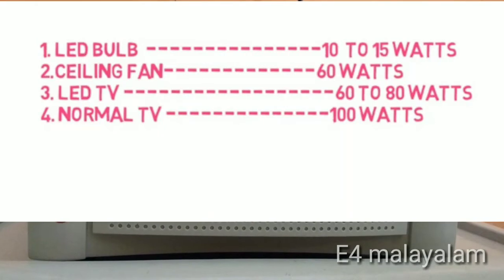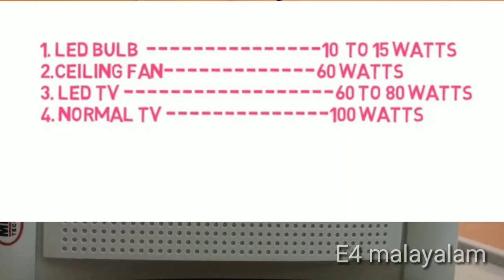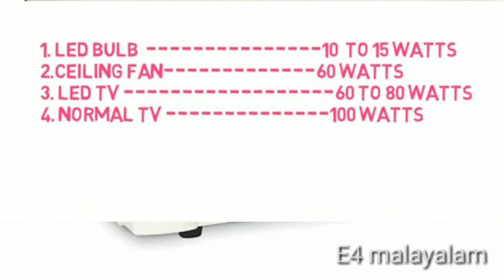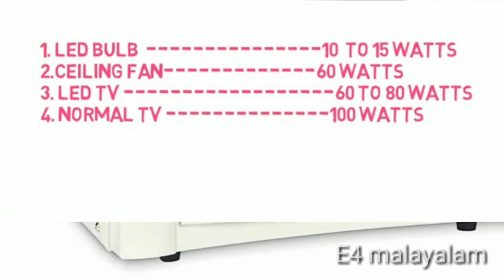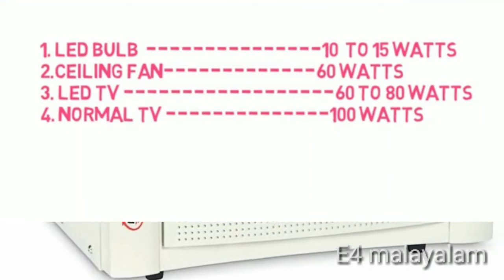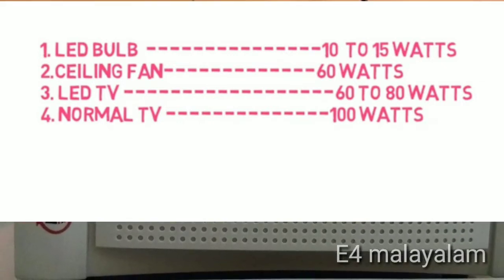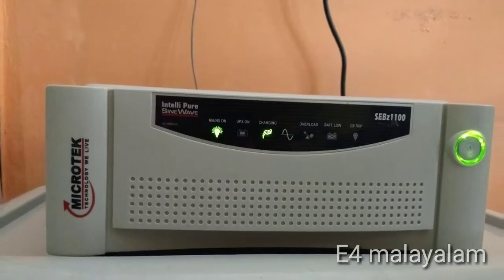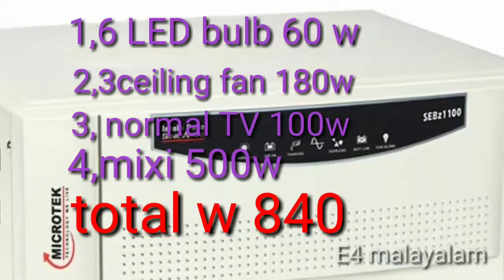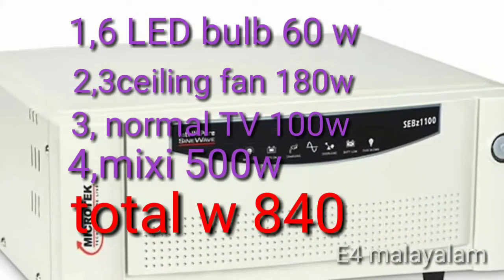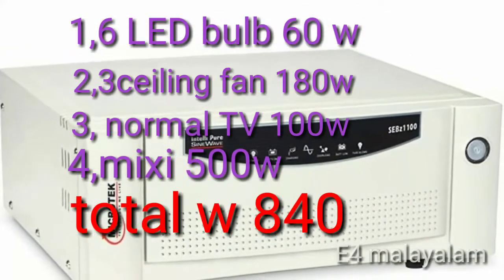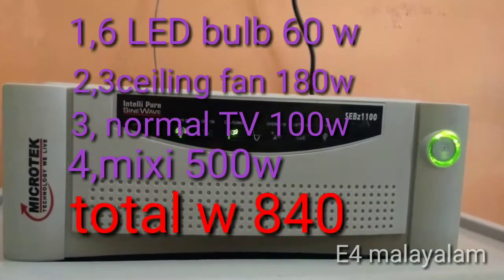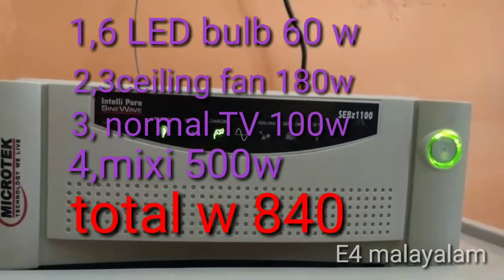Now we will calculate the inverter load. The LED is 10W to 15W. The ceiling fan is 20W. Another LED load is 60W. A normal TV is 3W. The LED total is 60W.